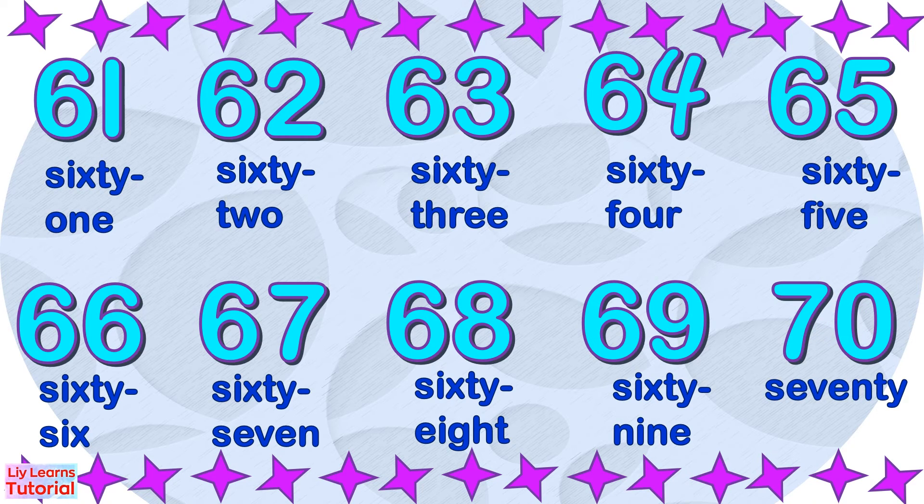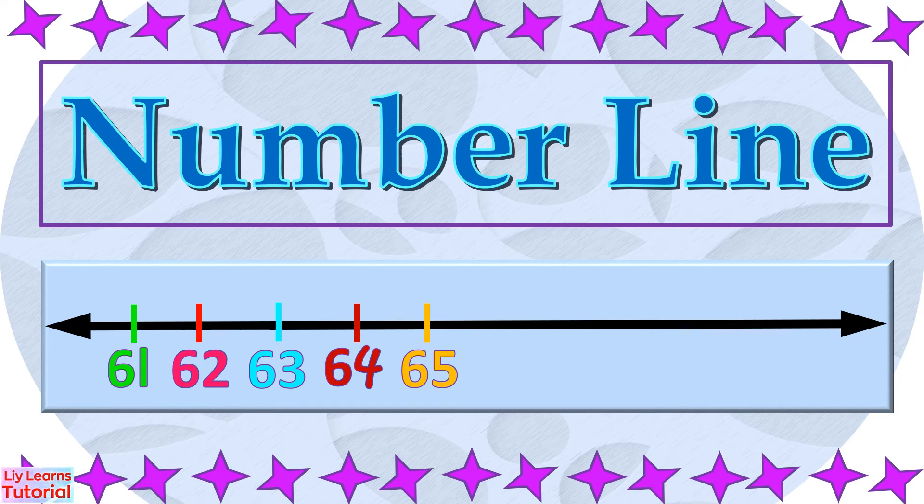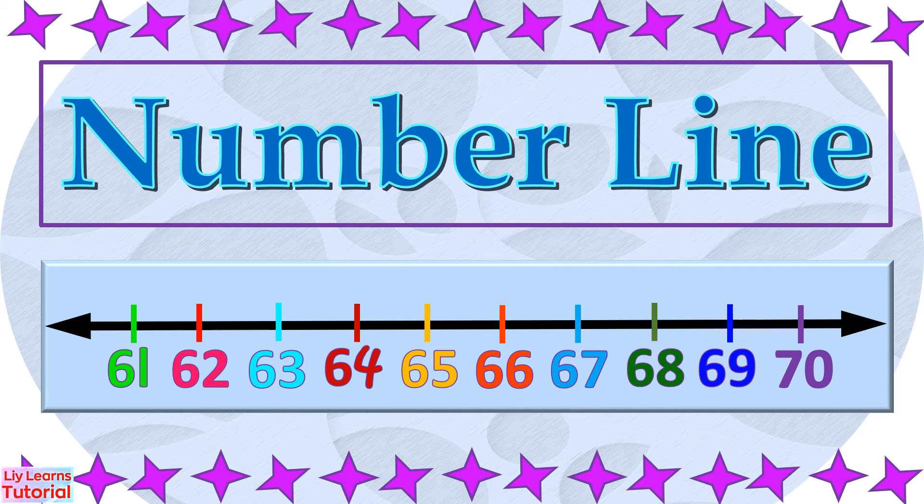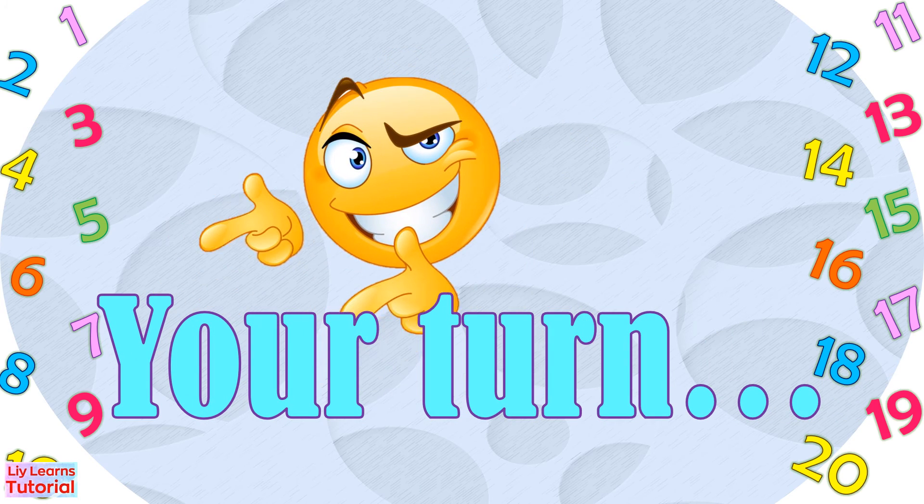70. We can also write numbers 61 to 70 on the number line. 61, 62, 63, 64, 65, 66, 67, 68, 69, 70. Now it's your turn.